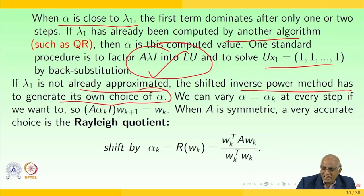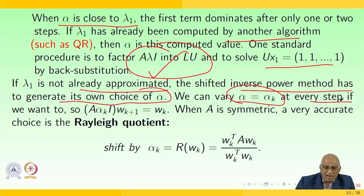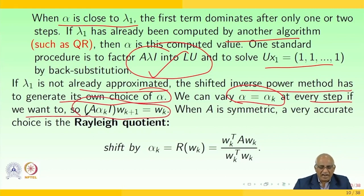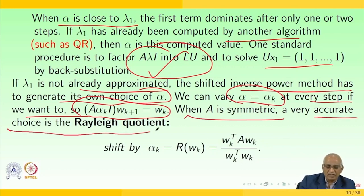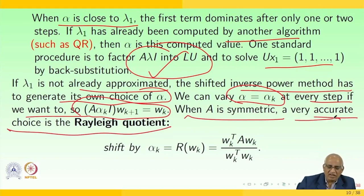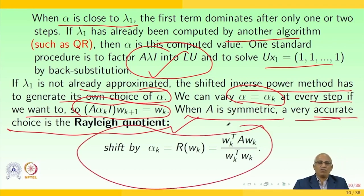When A is symmetric, a very accurate choice of shift is the Rayleigh quotient. We shift by αₖ = R(wₖ) = wₖᵀAwₖ / wₖᵀwₖ, where the step solves (A − αₖI)wₖ₊₁ = wₖ.